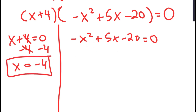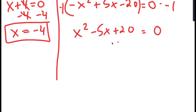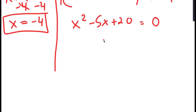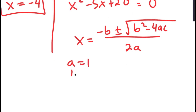For negative x squared plus 5x minus 20 equals 0, we have a negative sign in front of x squared, so I'm going to multiply both sides by negative 1 to get x squared minus 5x plus 20 equals 0. To solve this, I'm going to use the quadratic formula: negative b plus or minus the square root of b squared minus 4ac, all over 2a. In this case a is 1, b is negative 5, and c is 20.